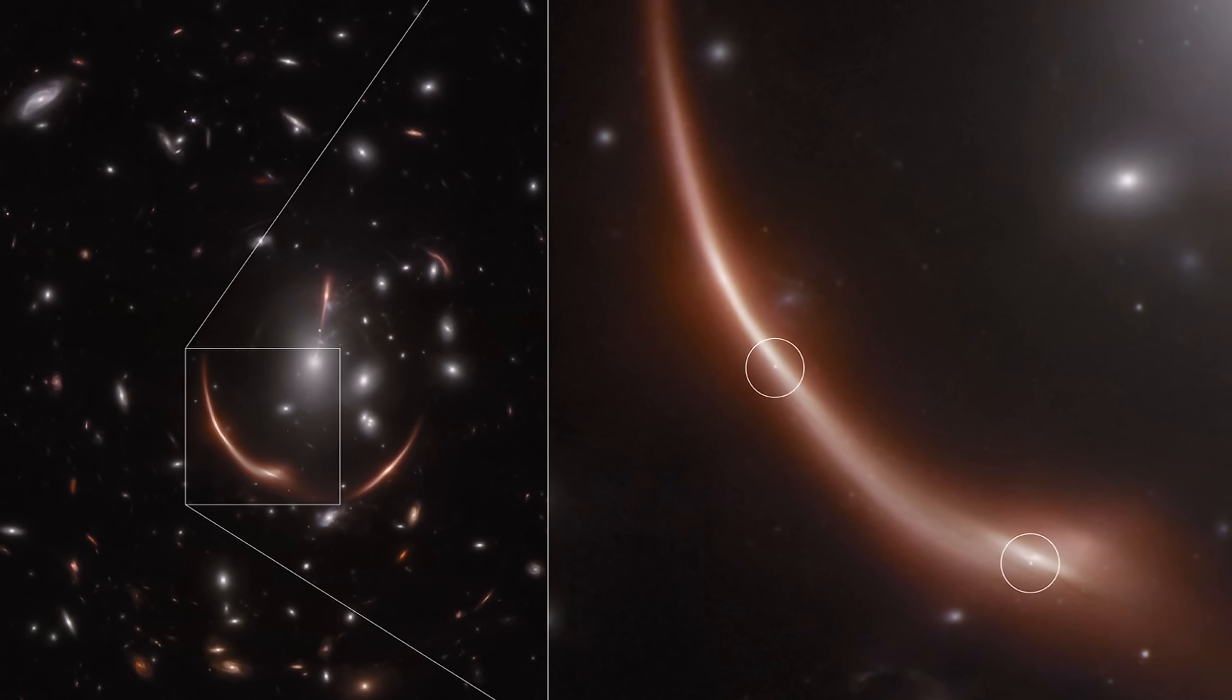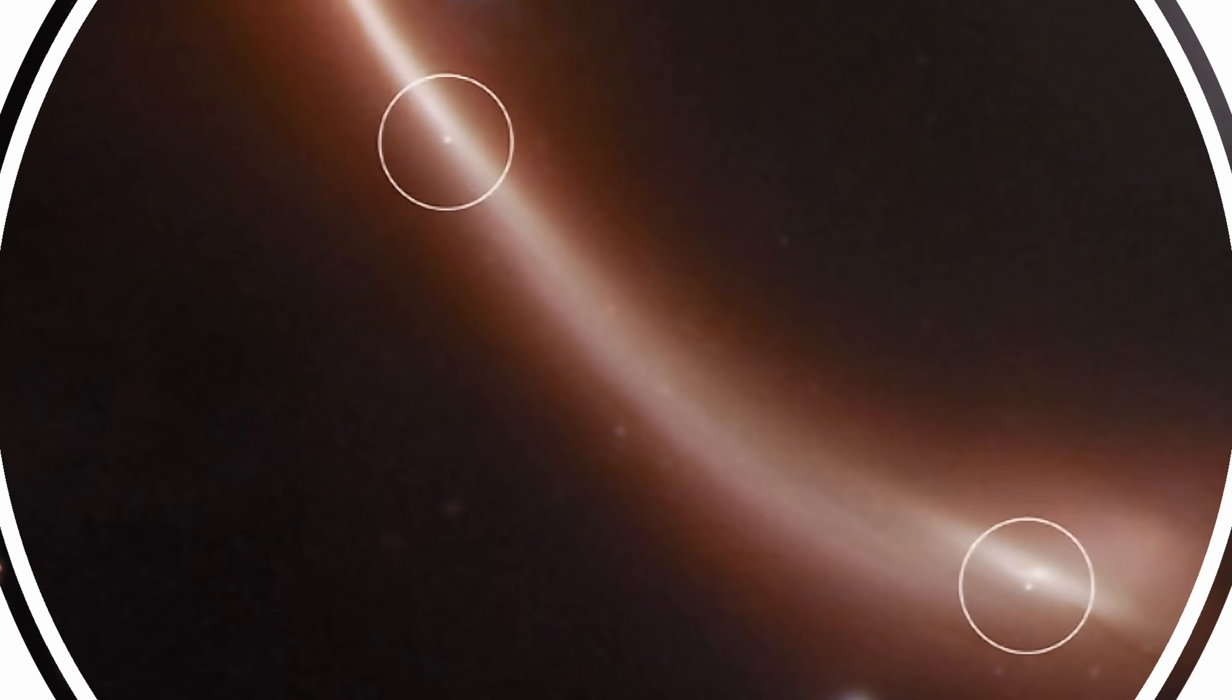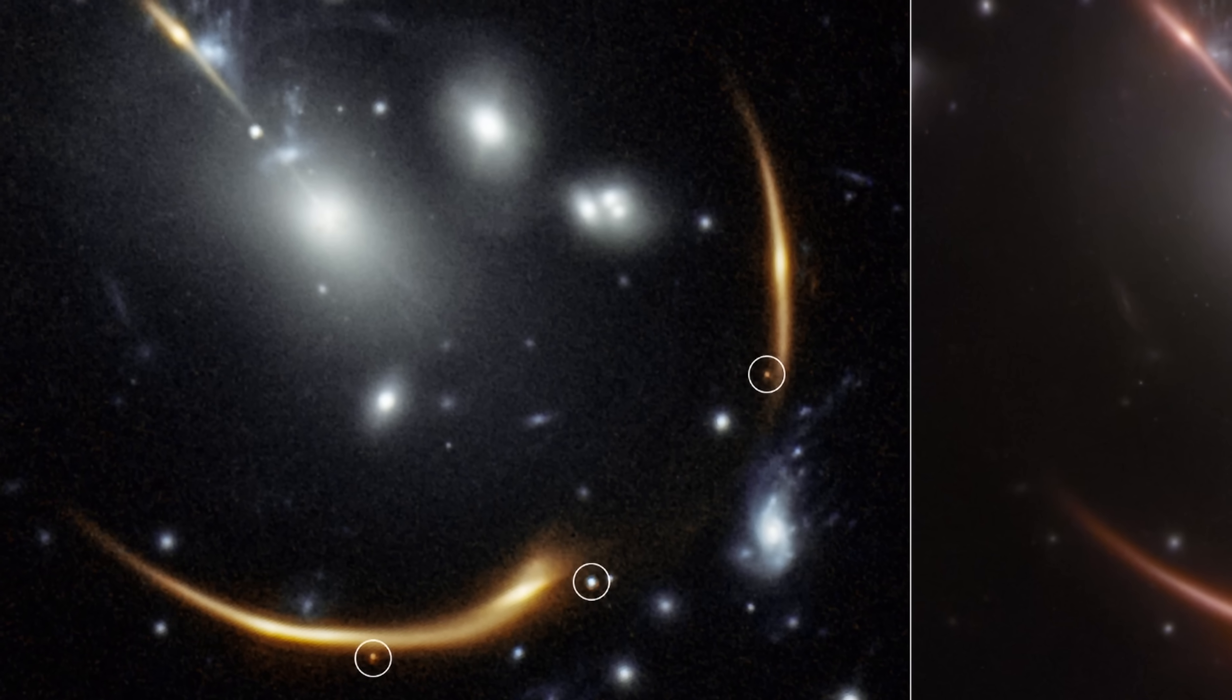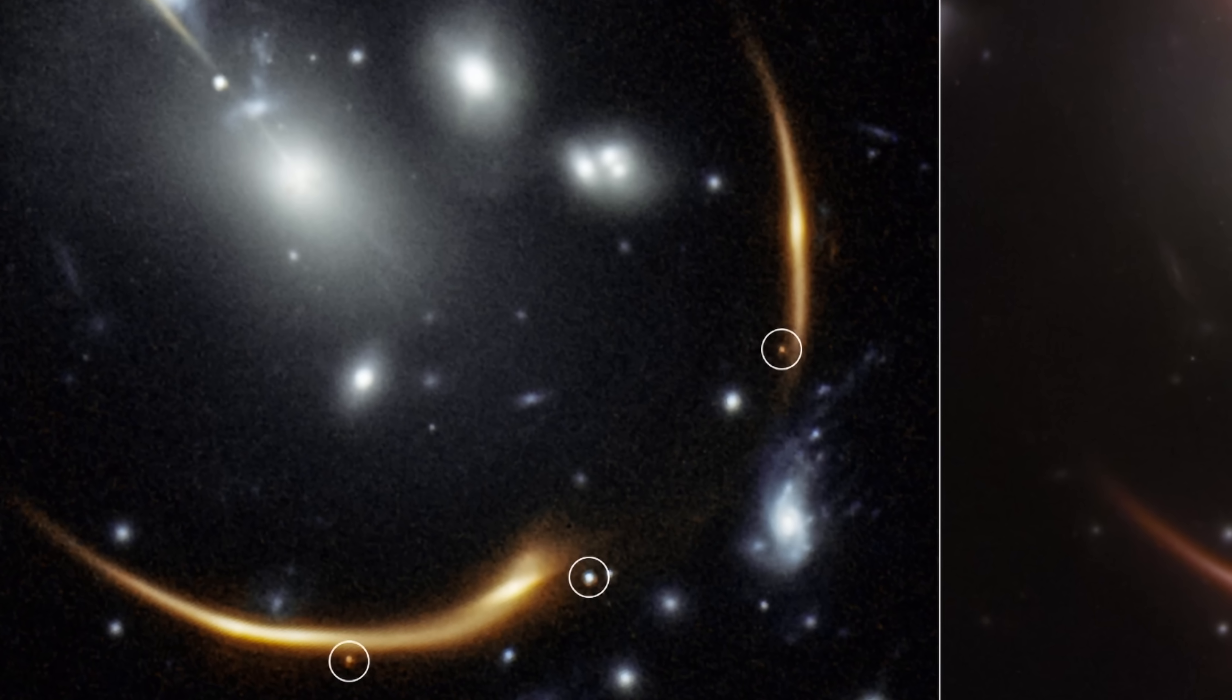This is a galaxy known as MRG M0138 and this was a multiply-lensed supernova originally discovered by the Hubble in 2016. Back then the supernova produced three separate events as you can see in this image. And because this was approximately 10 billion light years away from us, this was already pretty exciting.